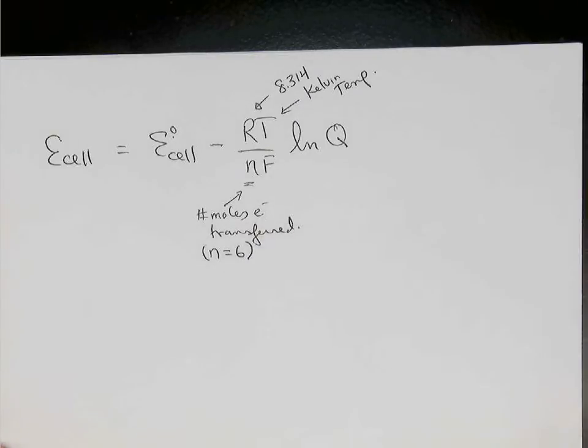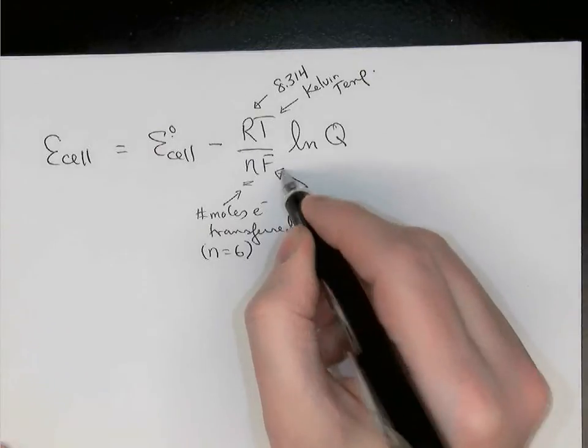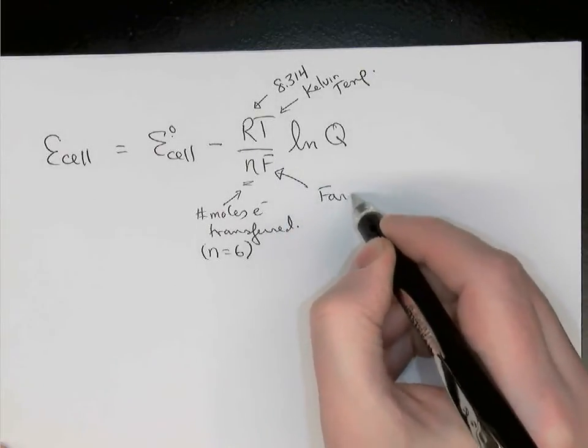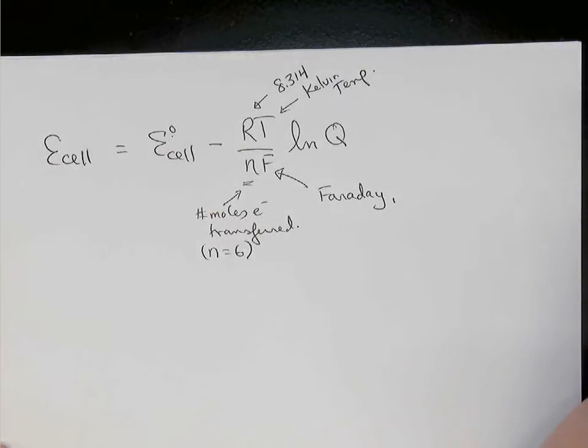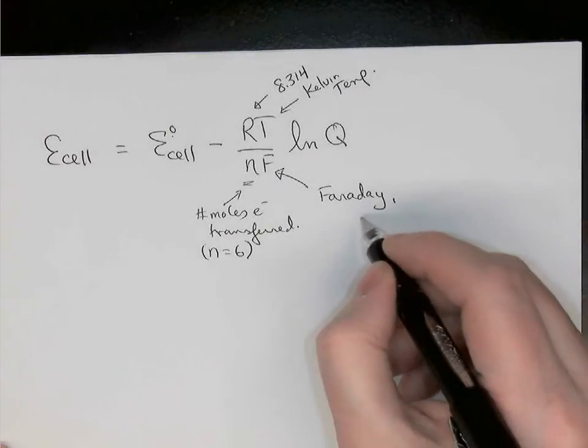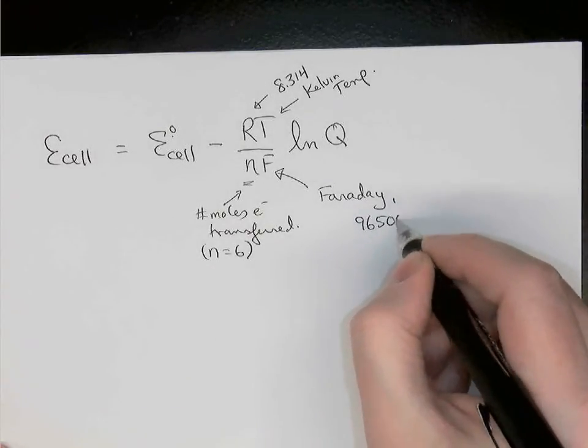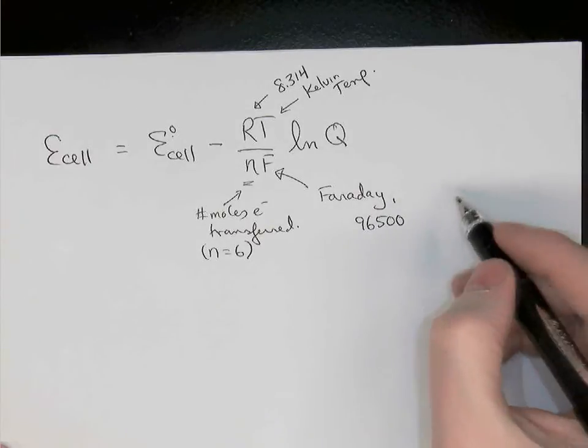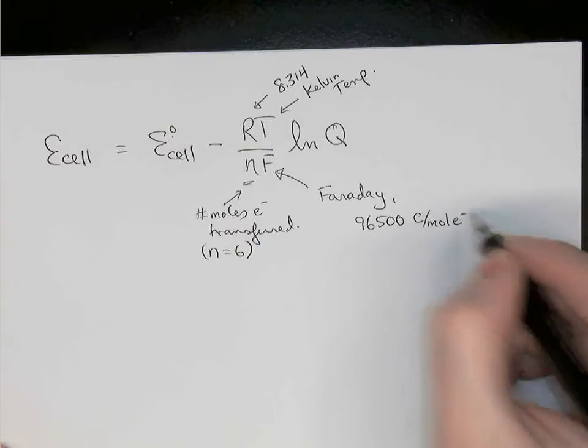The F in the Nernst equation is called the Faraday, and it's a constant. It represents the charge, measured in coulombs, carried by one mole of electrons. And it's a constant. Its value is 96,500, rounded off to three significant digits, coulombs per mole of electrons.